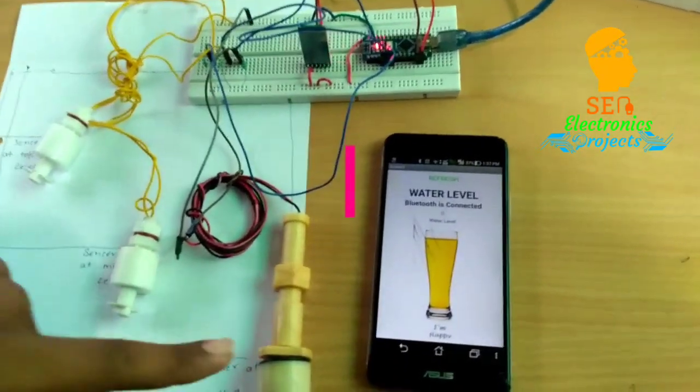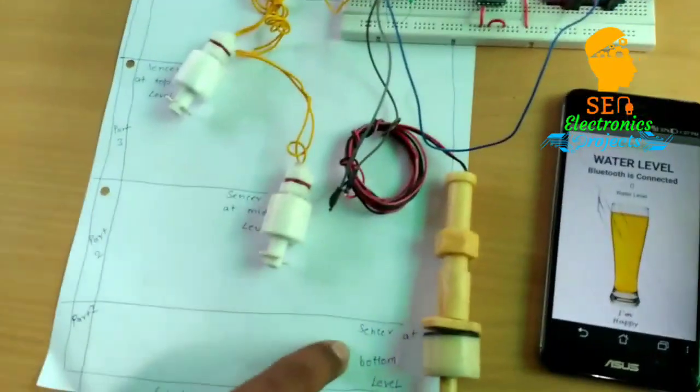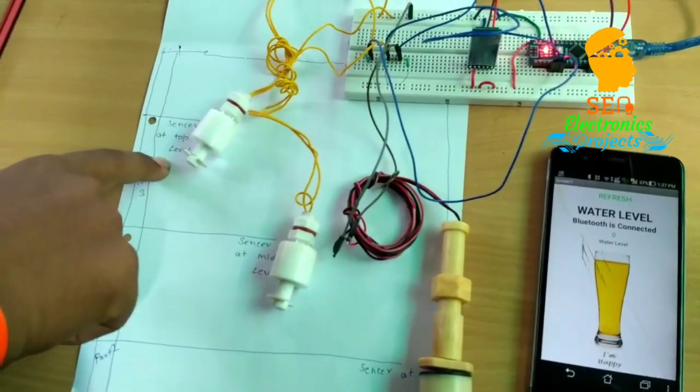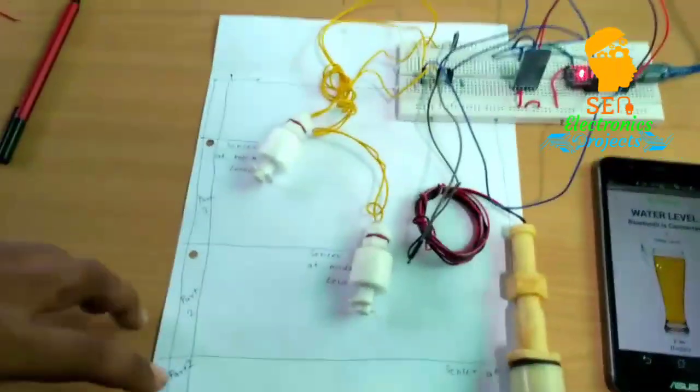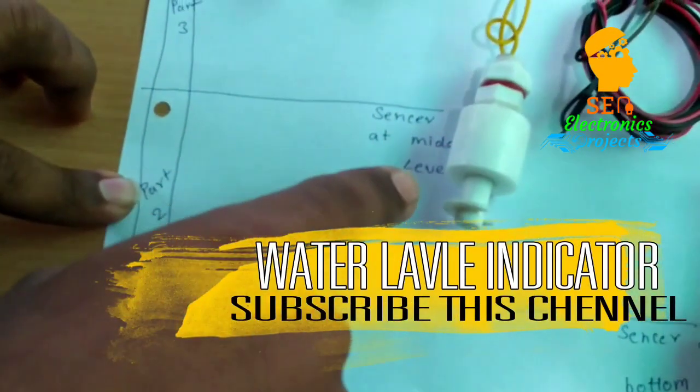In this we have used three water float sensors at different levels: at the bottom level, at the middle level, and at the topmost level. We divided the water tank into three parts. Part one consists of water sensor one, part two consists of sensor number two.